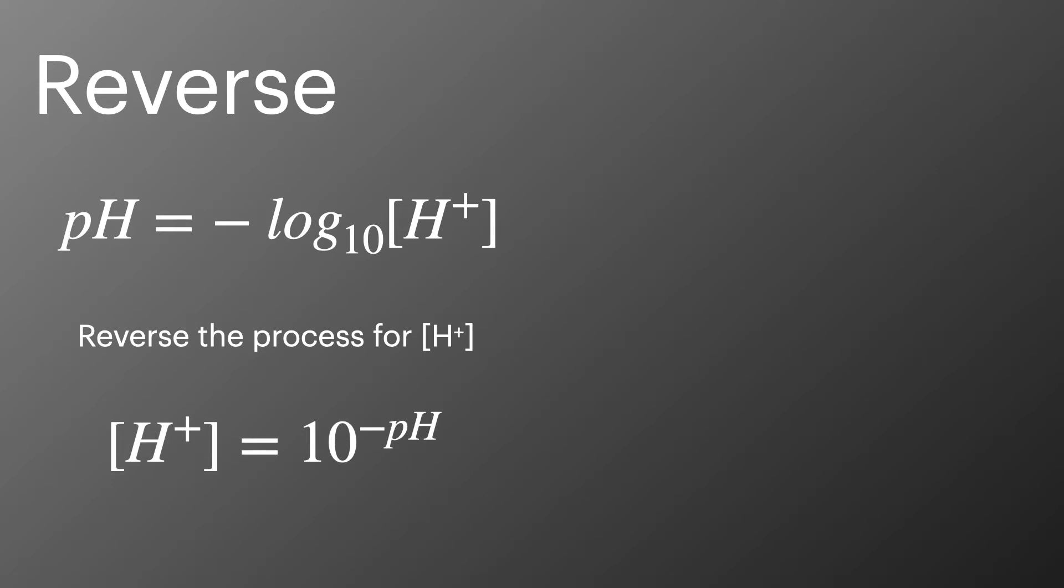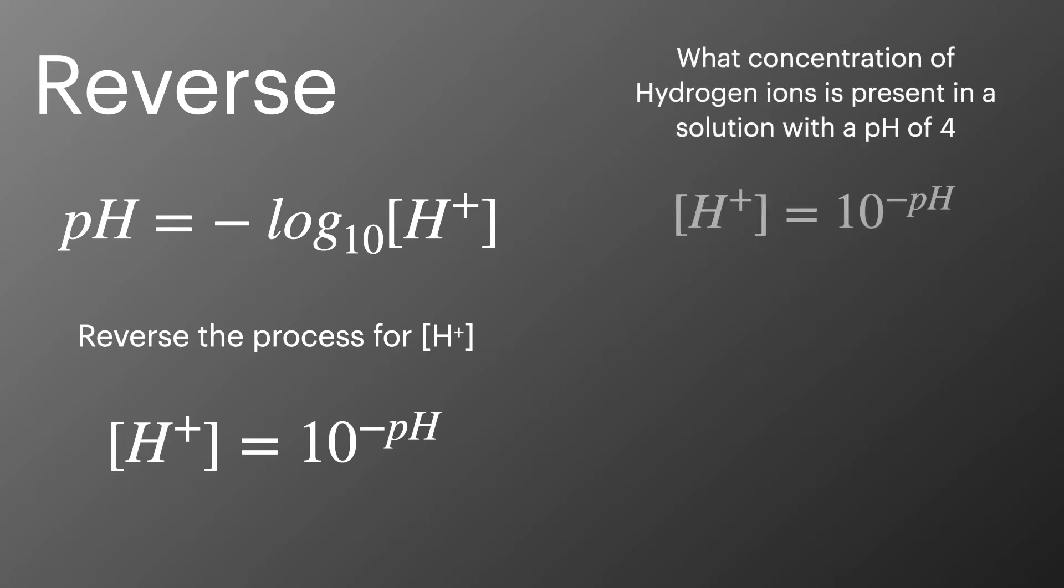If we want to reverse this process it's quite simple. We can calculate the hydrogen ion concentration from the pH value. We do this just by doing 10 to the power of the minus pH. We can work this back looking at this example where we're given a solution of a pH of 4 to give us the concentration of hydrogen ions of 1 times 10 to the minus 4 moles per decimetre cubed.